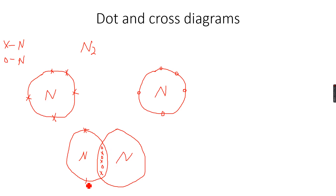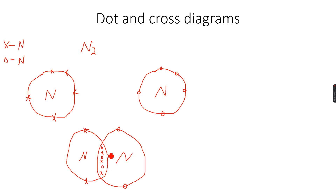We are left with two electrons here and two electrons here. If I count the total number of electrons on both nitrogen atoms — for the one on the right: one, two, three, four, five, six, seven and eight — complete.